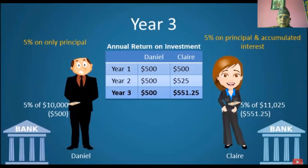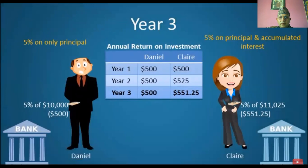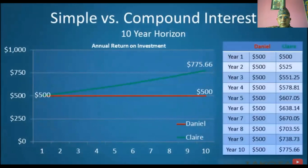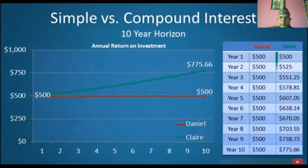While this may seem like an inconsequential amount of money, it is important to remember that the effects of compound interest increase over time. As we can see from this example, Claire's annual return on investment increased by $26.25, all the way from $525 to $551.25, just from year 2 to year 3. The effects of compound interest are even more profound when we compare their return on investment over a 10-year horizon, with Claire's annual return climbing from $500 all the way to approximately $775.